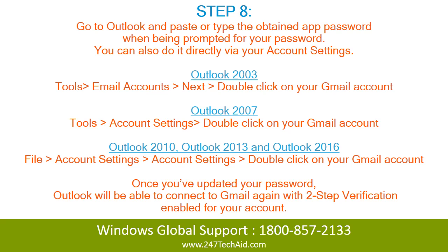Outlook 2013 and Outlook 2016: File > Account Settings > Account Settings > Double-click on your Gmail account. Once you've updated your password, Outlook will be able to connect to Gmail again with 2-step verification enabled for your account.